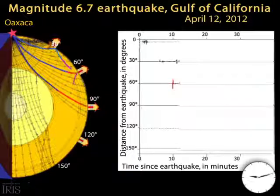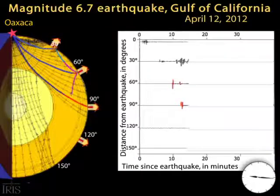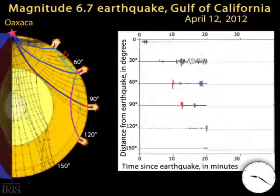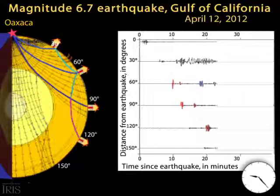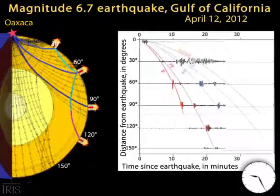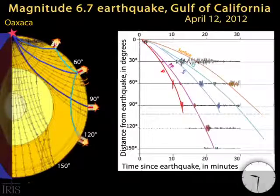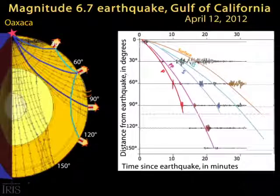The P and S waves bounce off station 2 and travel as PP and SS waves through the mantle to station 4. The orange, slow, lumbering surface waves continue a slower path along the surface of the Earth, also in all directions away from the epicenter of the earthquake.